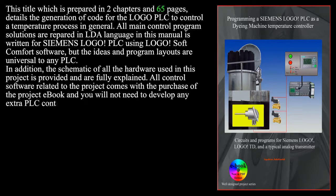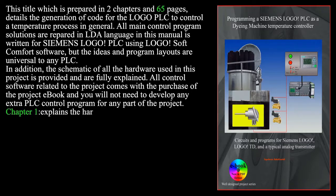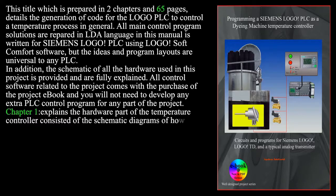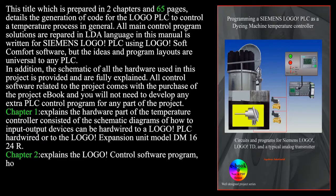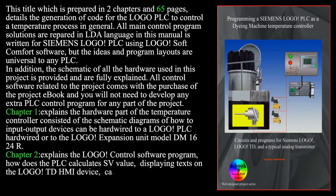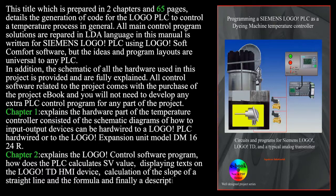Chapter 1 explains the hardware part of the temperature controller, including schematic diagrams of how input/output devices are hardwired to the LOGO PLC and to the LOGO expansion unit model DM1624R. Chapter 2 explains the LOGO control software program: how the PLC calculates the SV value, displaying texts on the LOGO TD HMI device, calculation of the slope of a straight line and its formula, and descriptions of special functions related to the LOGO PLC.